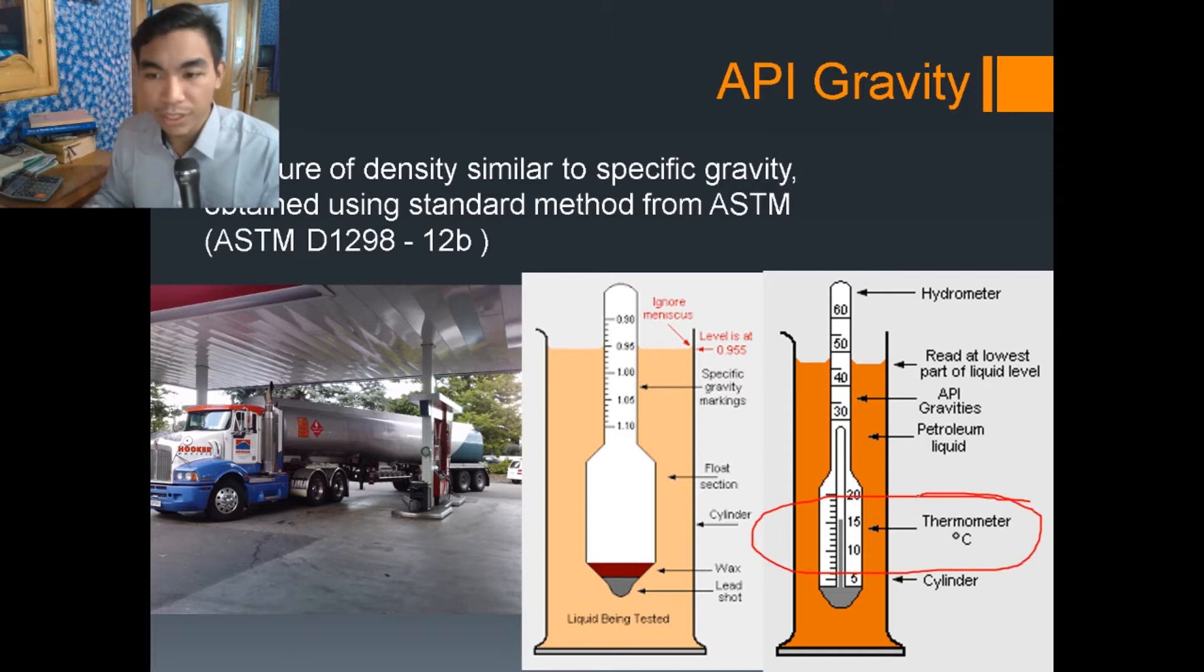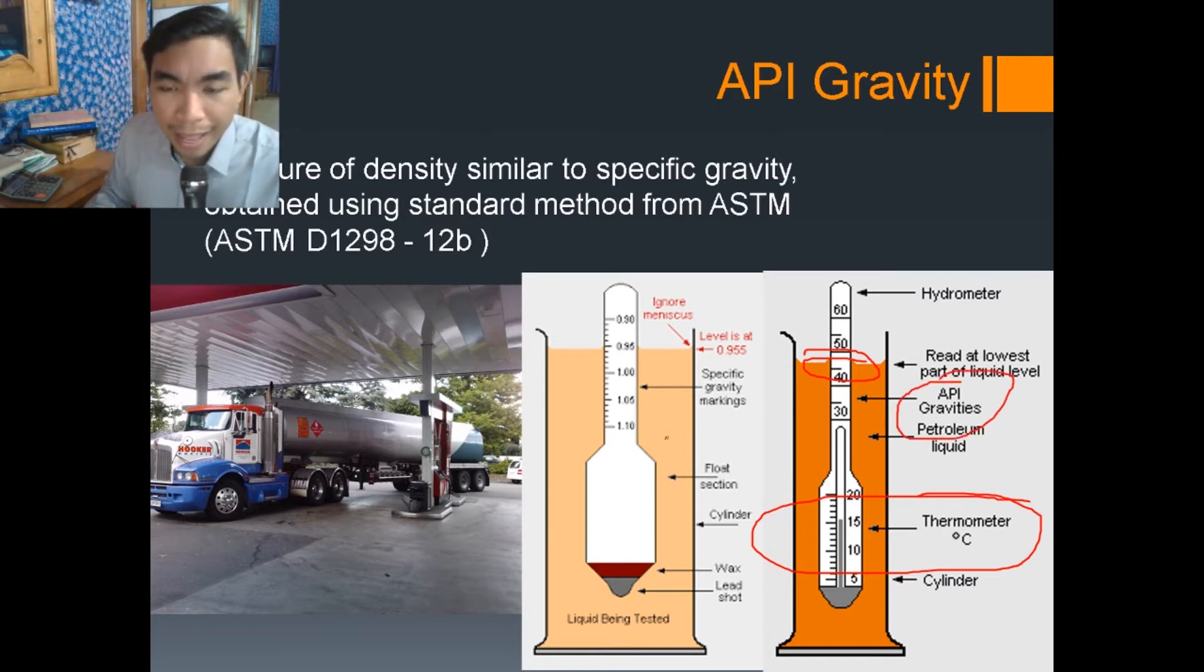On the bottom right screen down here, and then up there on top where the liquid surface, the meniscus meets the hydrometer, you get the API gravity. There are also some hydrometers that have specific gravity units instead.